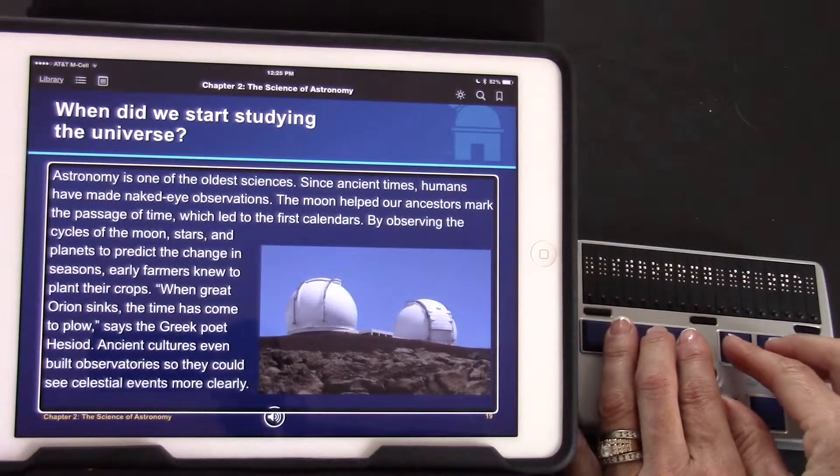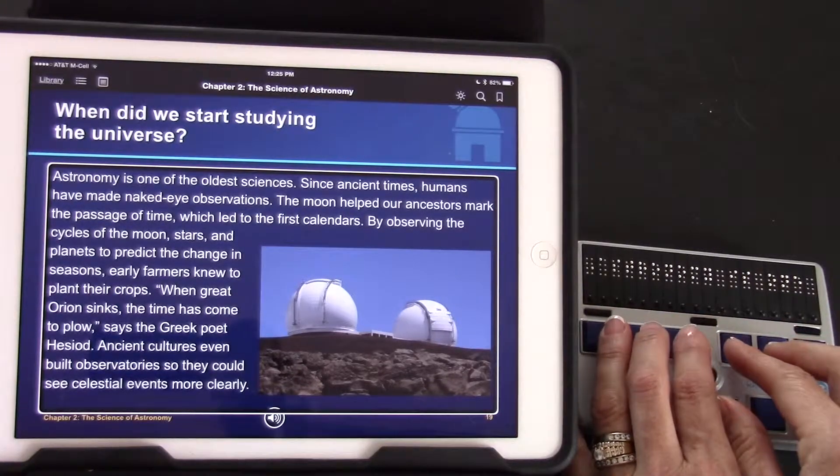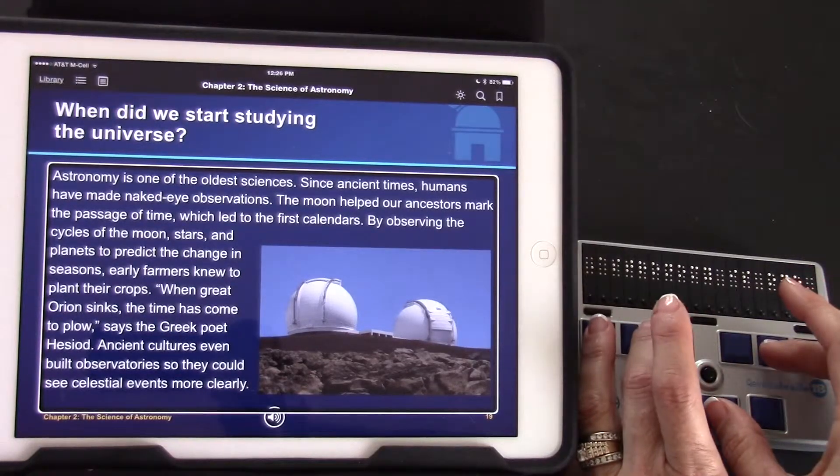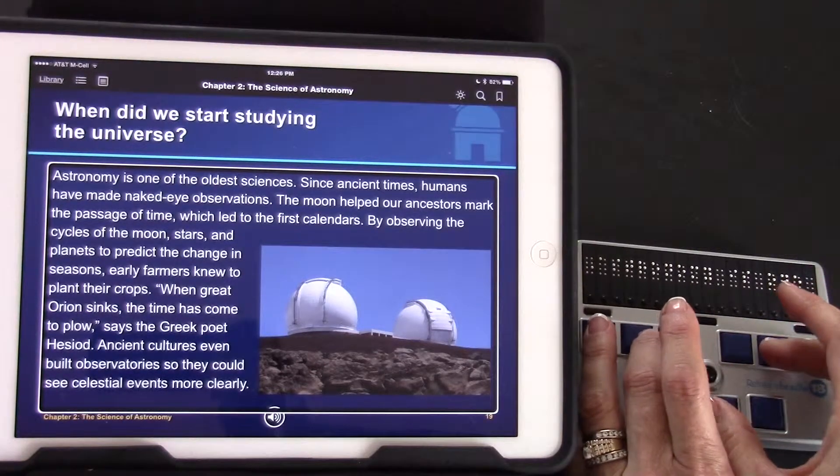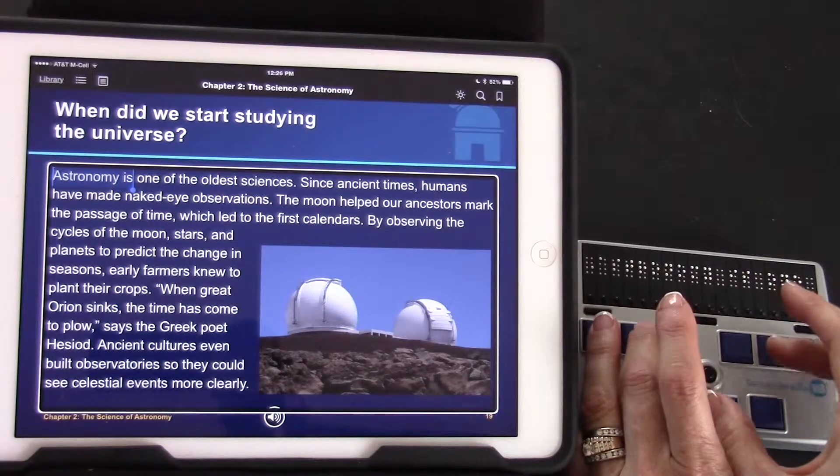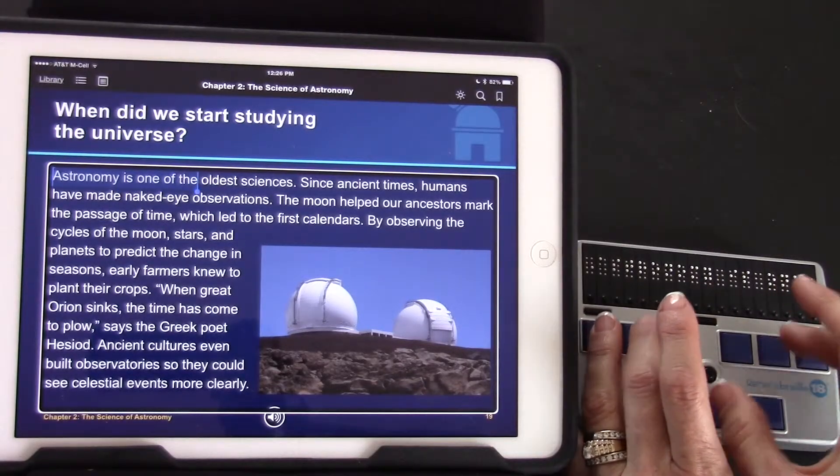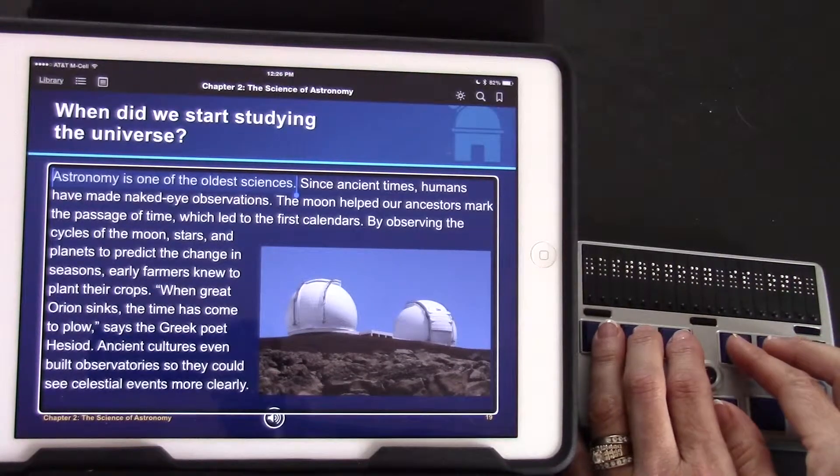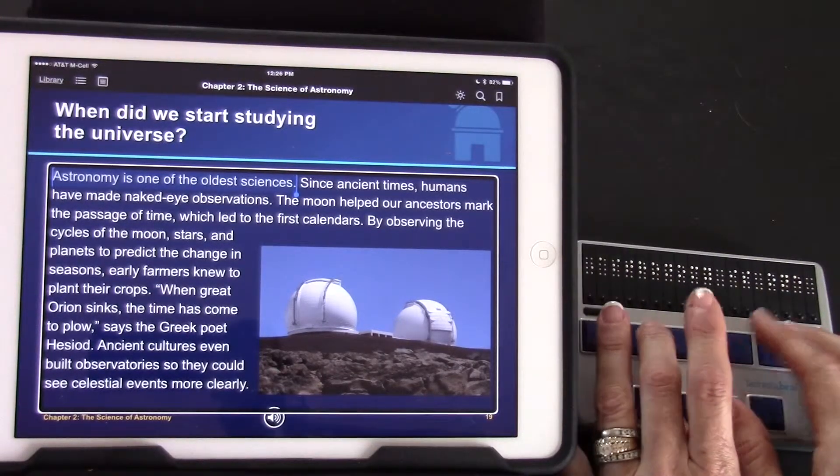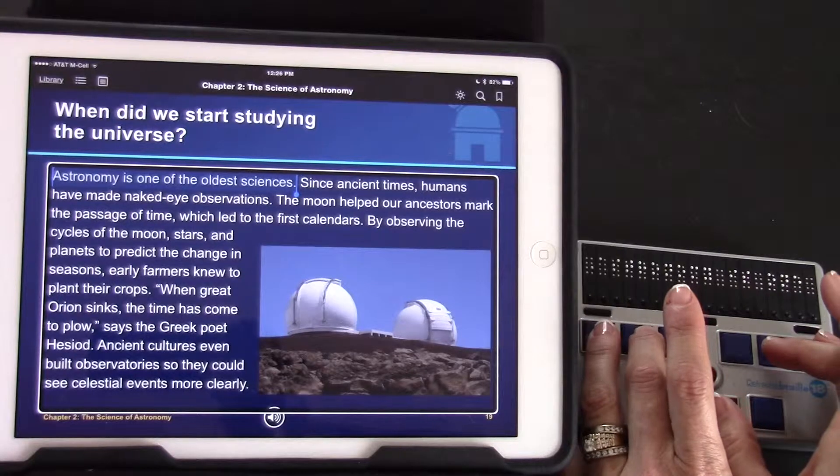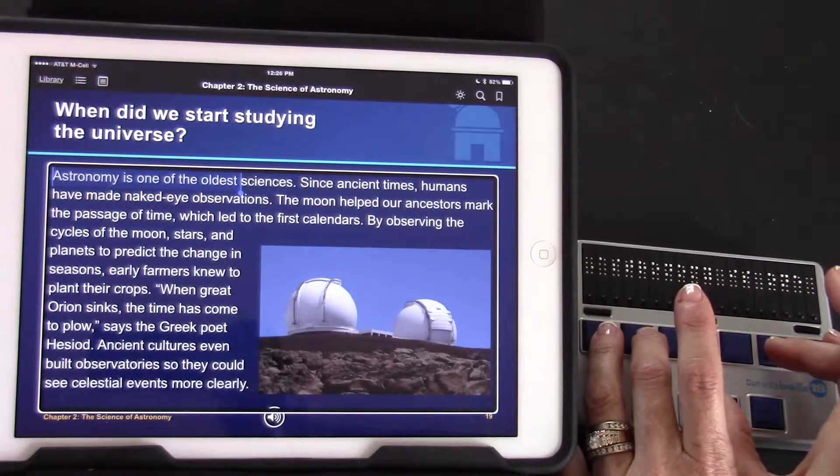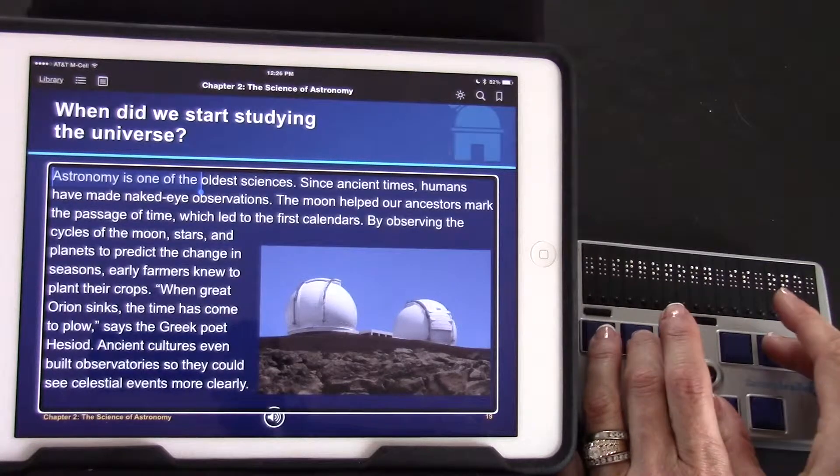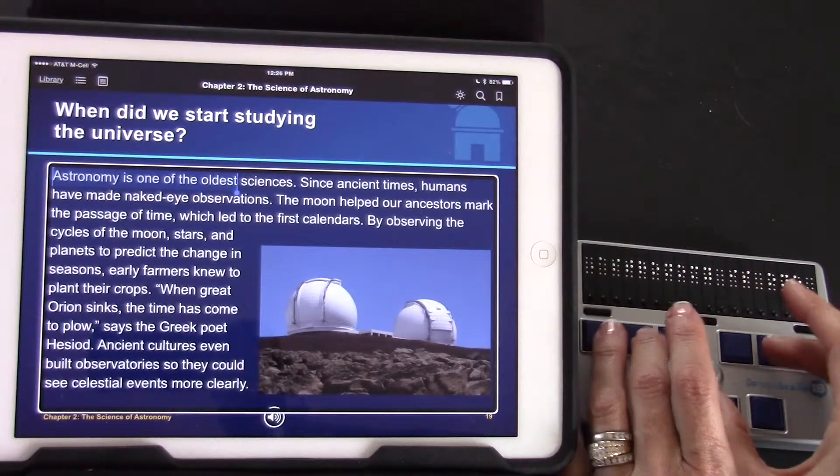I'm going to select the first sentence astronomy is one of the oldest sciences using the drop D chord two five six space. Astronomy is one of the oldest sciences selected. I can deselect using the dropped F or the two three five space. Sciences unselected oldest unselected. Again I can select using drop D. Oldest sciences selected.